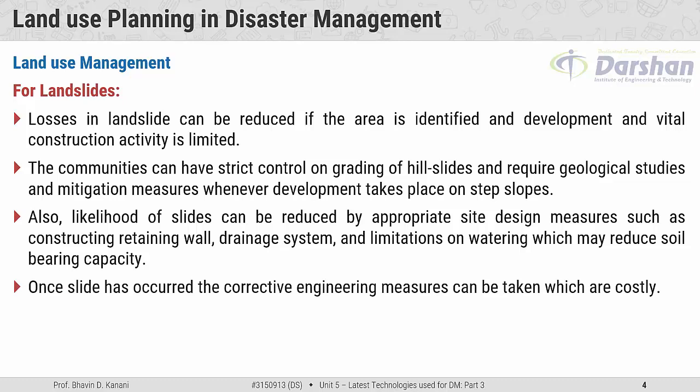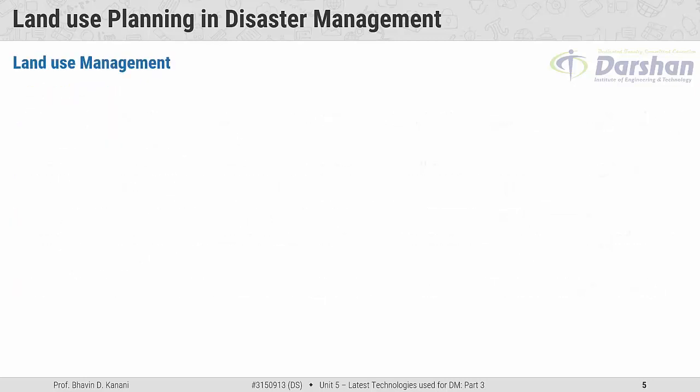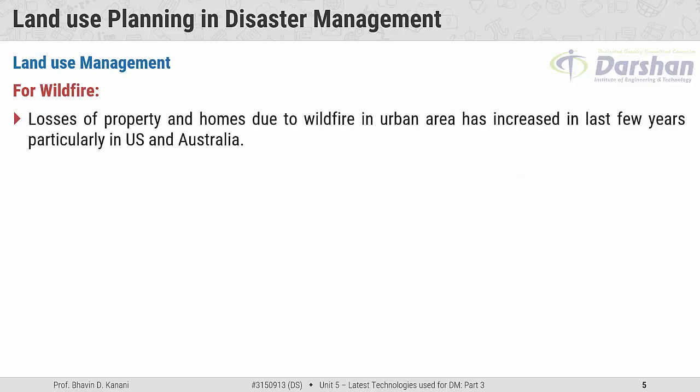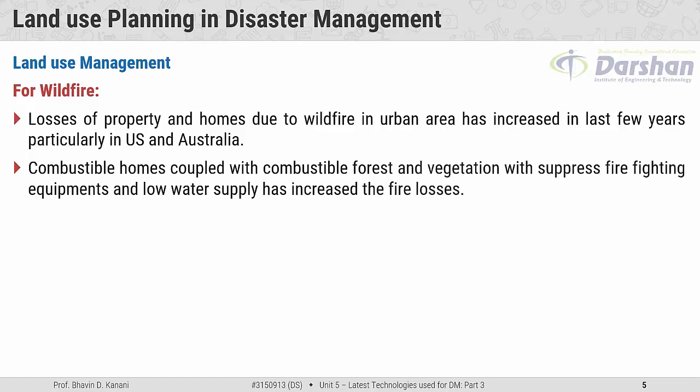Once a slide has occurred, corrective engineering measures can be taken, which are costly. Land use management for wildfire: losses of property and homes due to wildfire in urban areas has increased in the last few years, particularly in the US and Australia. Combustible homes coupled with combustible forest and vegetation, suppressed fire-fighting equipment, and low water supply has increased fire losses.